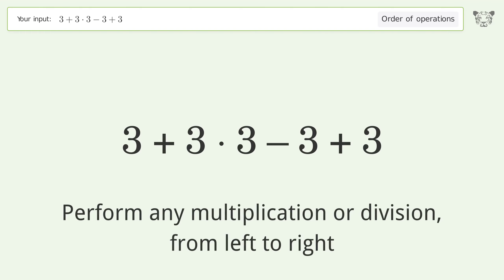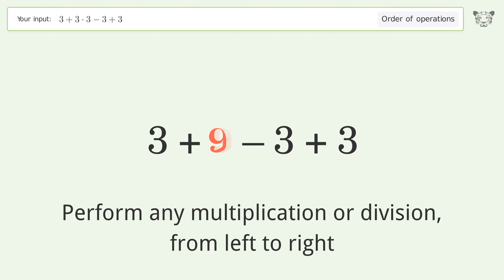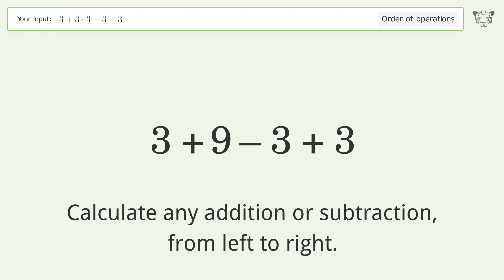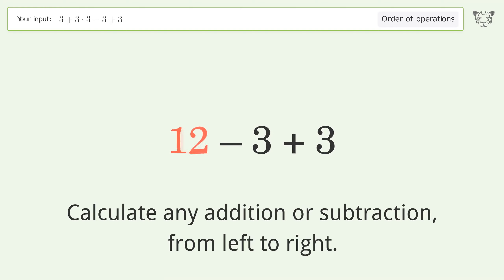Perform any multiplication or division from left to right: 3 times 3 equals 9. Then calculate any addition or subtraction from left to right: 3 plus 9 equals 12.